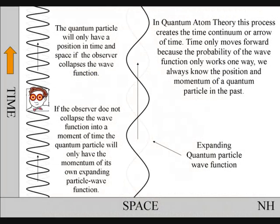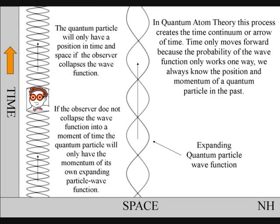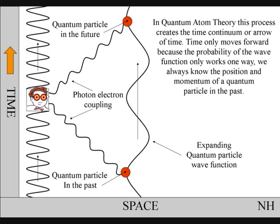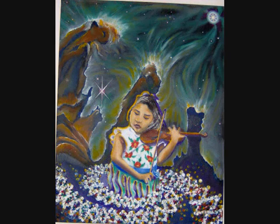In quantum atom theory, this process also creates a time continuum, or arrow of time. Time only moves forward because the probability of the wave-function only works one way. We always know the position and momentum of a quantum particle in the past. In this theory, there is no absolute or universal time because atoms create their own time relative to their position and momentum. This fits in with Einstein's theory of special relativity.